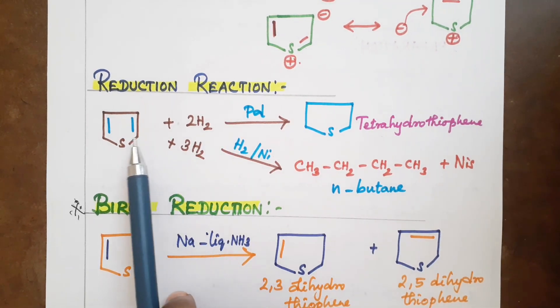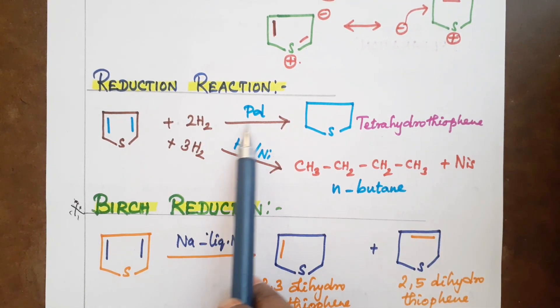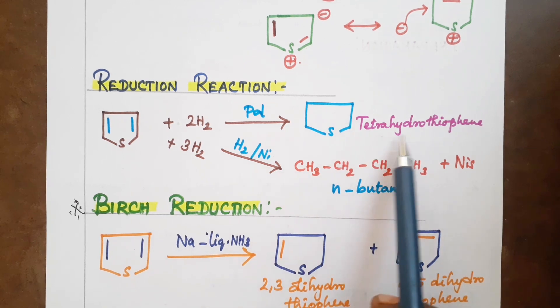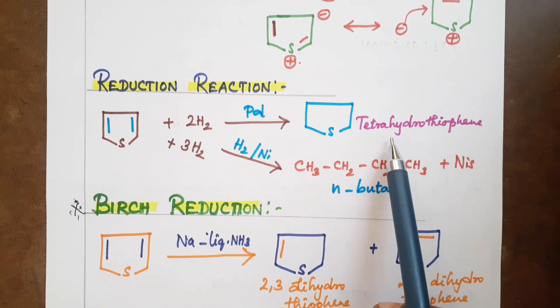Reduction reactions: The palladium reduction of thiophene gives tetrahydrothiophene, similar to the last lesson where furan gave tetrahydrofuran.